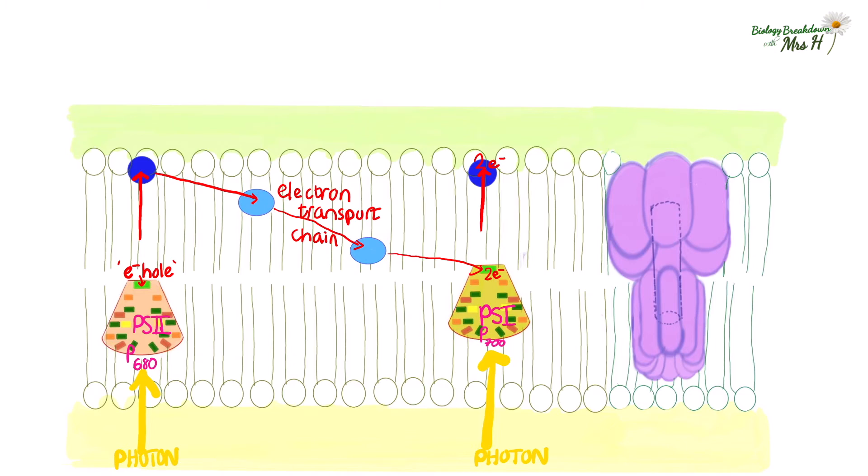As the electrons flow along the electron transport chain some energy is released and this energy is used to pump hydrogen ions or protons across the thylakoid membrane and into the thylakoid space. Remember that hydrogen ions wouldn't be able to pass through the phospholipid bilayer. I haven't drawn a channel for them because I thought it might complicate the diagram but they are being pumped across this thylakoid membrane into the thylakoid space.